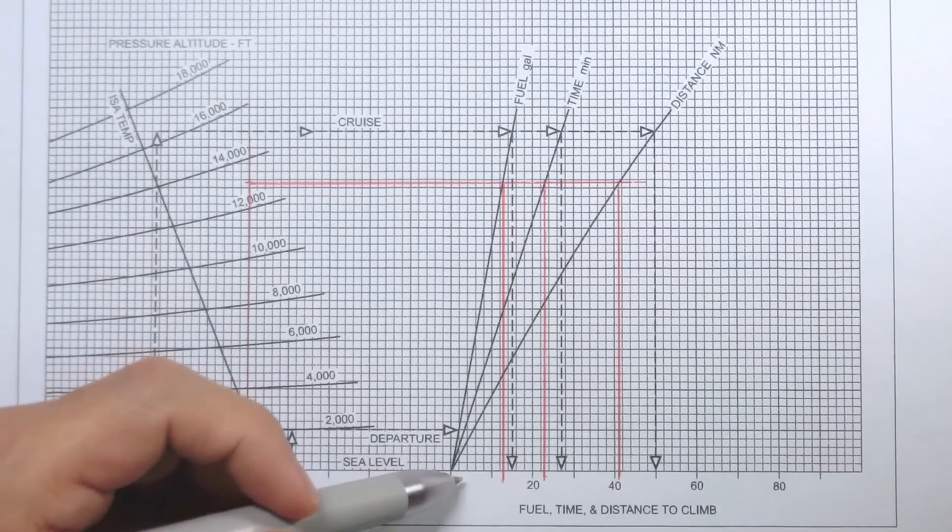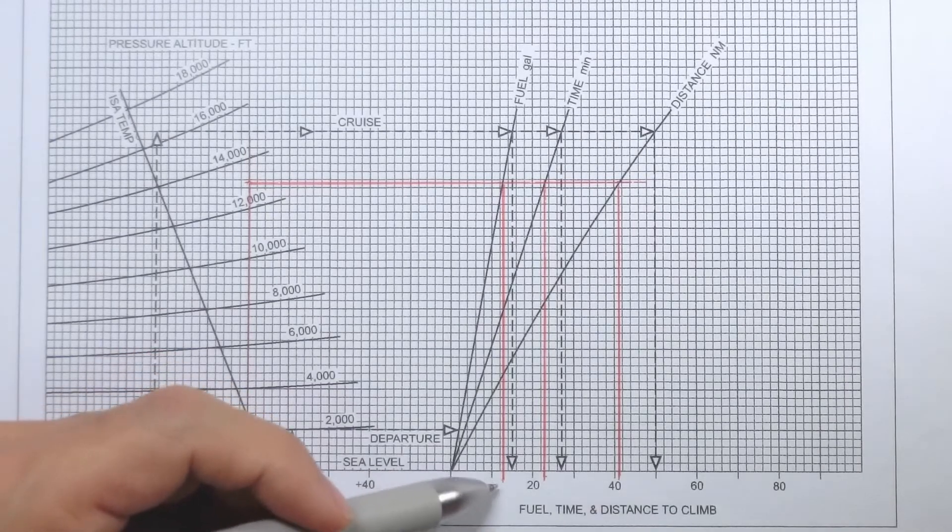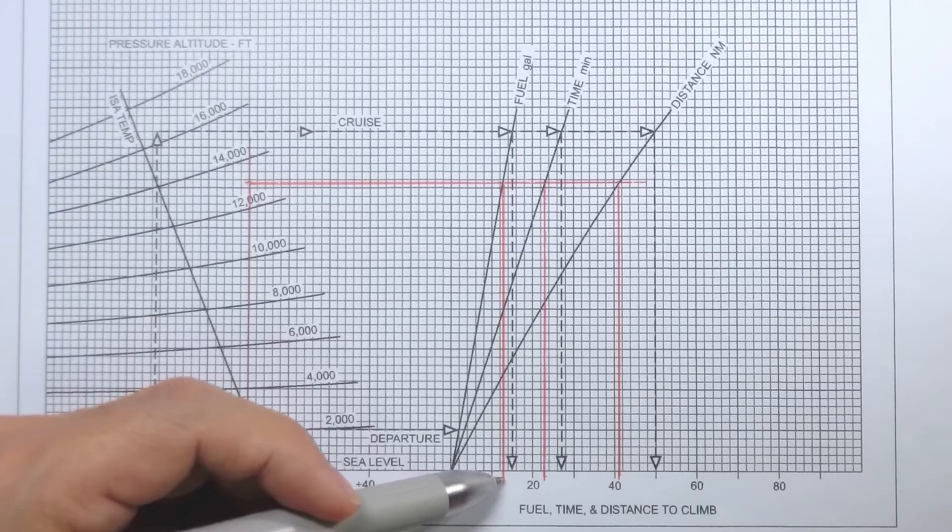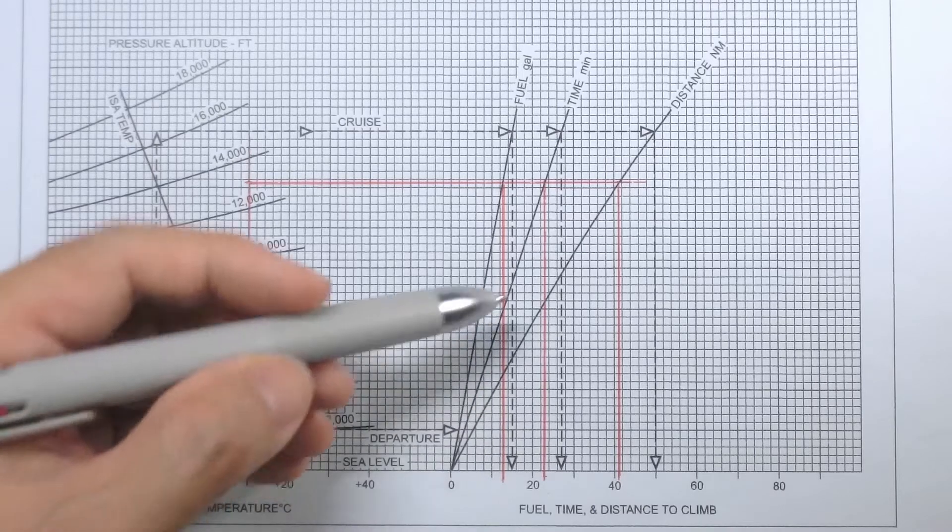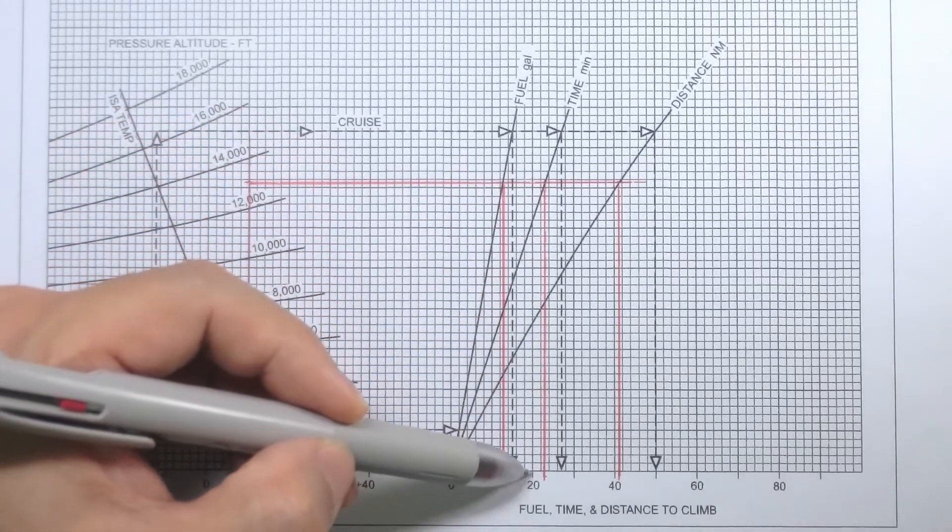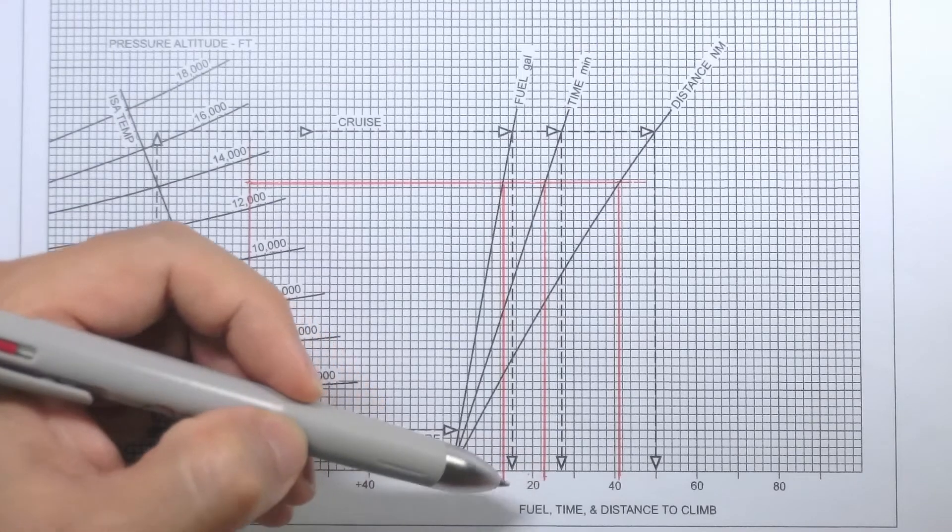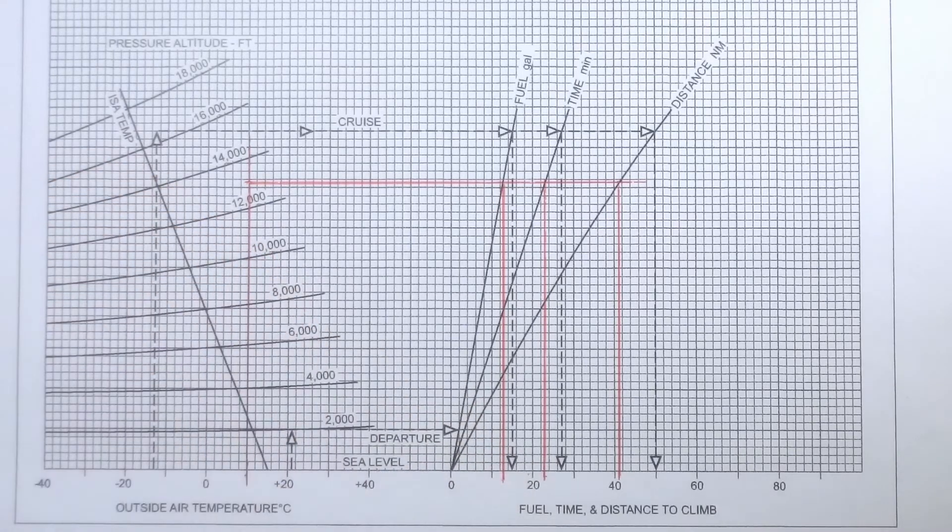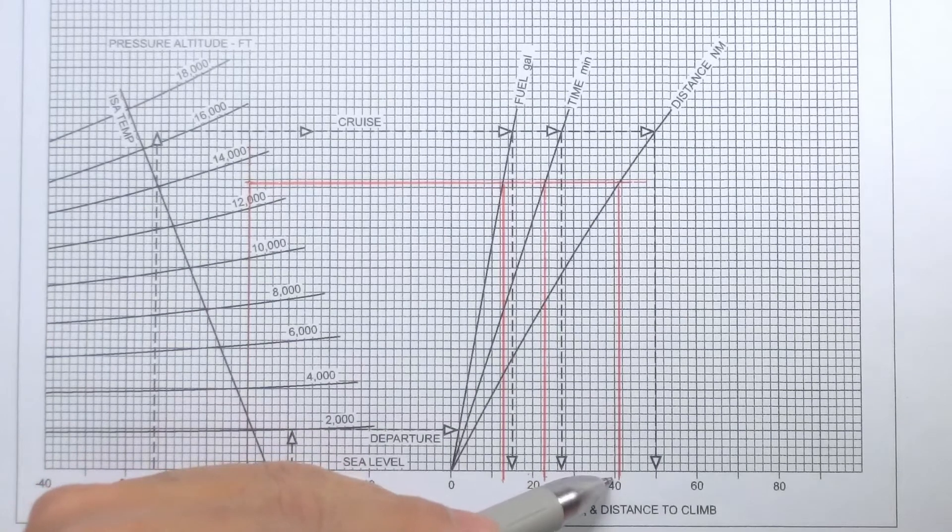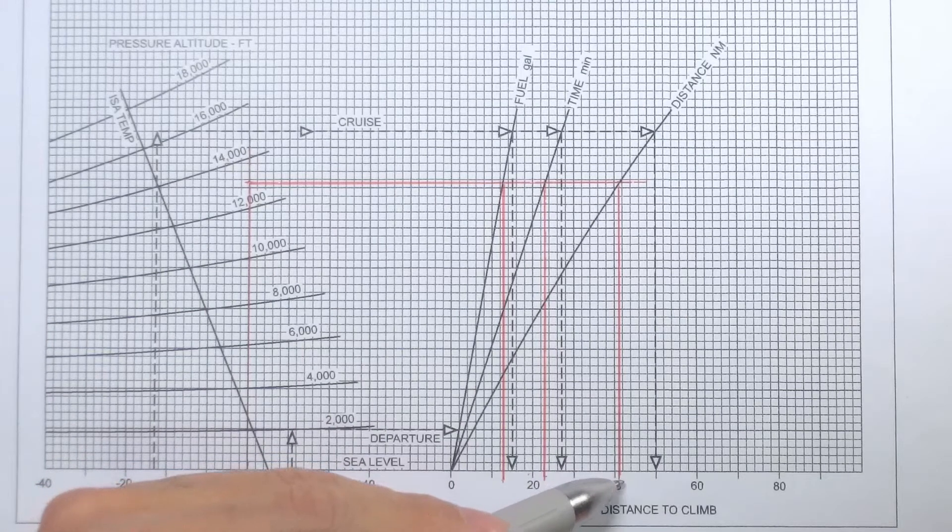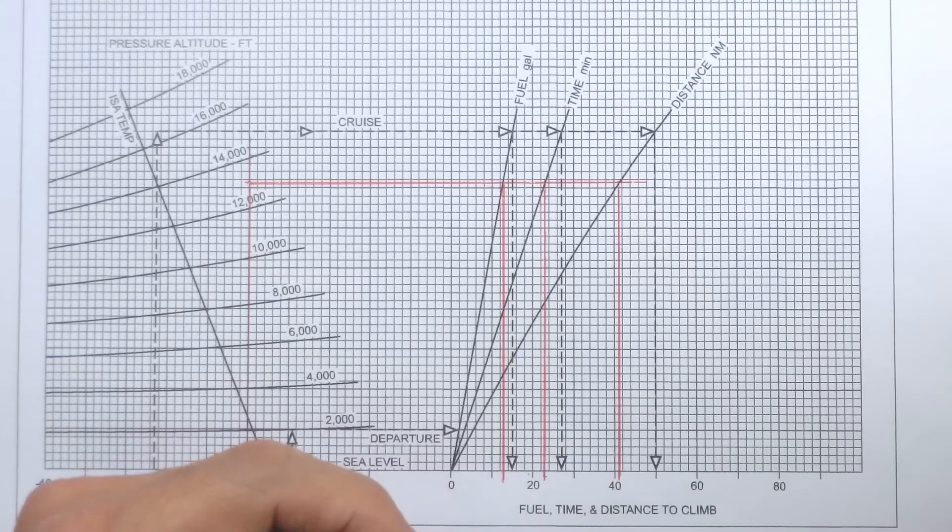And what we have here is fuel being 10, 12, not exactly 13 so maybe 12 and a half gallons. Time in minutes 22, 24, not exactly 23 so maybe 22 and a half minutes. And distance of not exactly 42 so about 41 nautical miles.